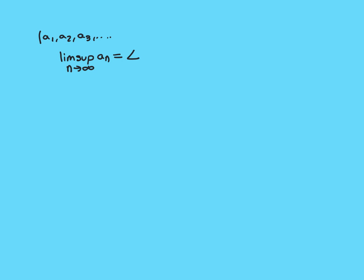So let's start with the limit superior case. We've got our sequence A, and we're assuming that this sequence has a limit superior. The limit superior as n approaches infinity of A_n exists and is equal to this value that we'll call L. The first part of the proof is I want to show that L is a limit point, i.e. that I can find a subsequence of the original sequence that converges to this value L.